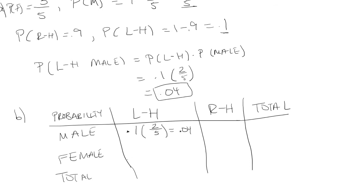For female left-handed, we multiply the probability a person is left-handed, which is 0.1, and the probability that it's a female, which is three-fifths. So this is 0.06. And if you add up these two probabilities, you end up getting 0.1.